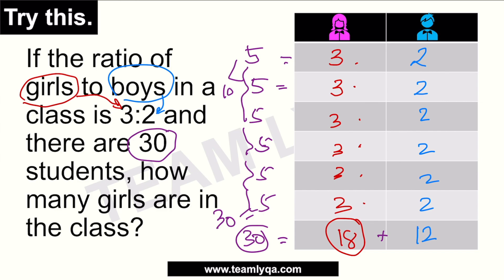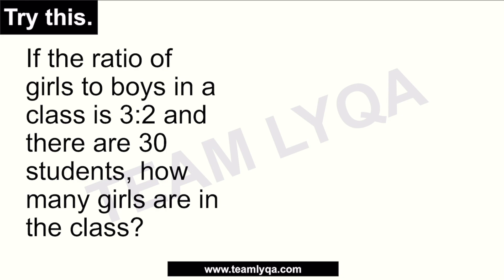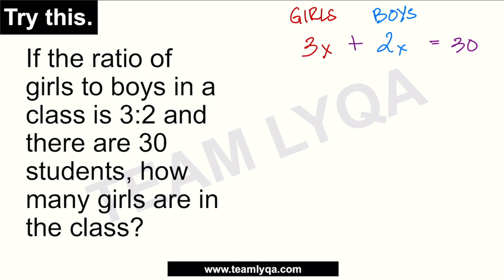Pero kapag magsasolve na tayo using algebra, ang ginagamit nating formula looks like this. It's the same problem, but this time we're going to use algebra. You have your girls and your boys. Ang ratio ng girls to boys is 3 is to 2. Para malaman natin kung ilan yung total nila, which is 30, maglalagay tayo ng x — x yung number of times na merong 3 at merong 2 para mabuo yung 30. So, 3x plus 2x is equal to 30.